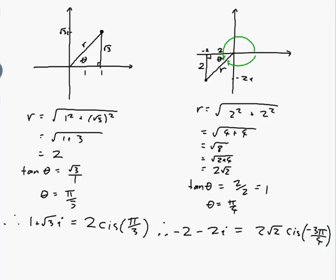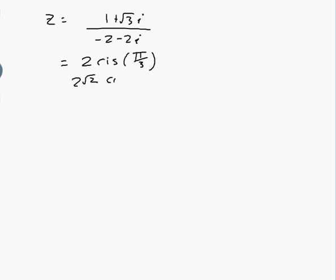Let's do the next bit of the question. I need to find z which is equal to 1 plus root 3i over minus 2 minus 2i. Well I converted the other numbers to polar form so I might as well put that in. So that was equal to 2 cis pi on 3 over 2 root 2 cis minus 3 pi on 4.